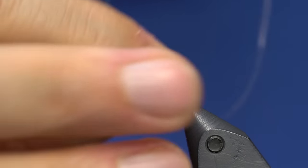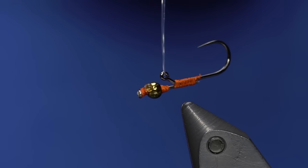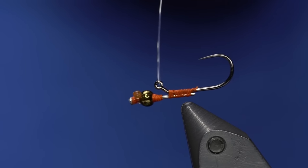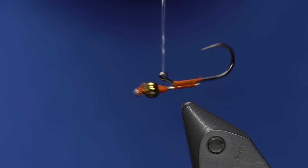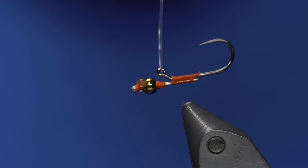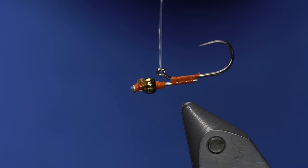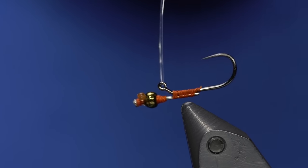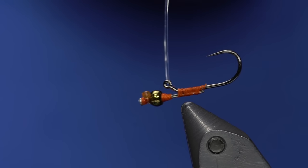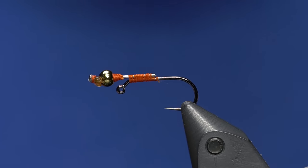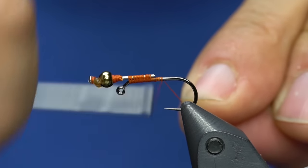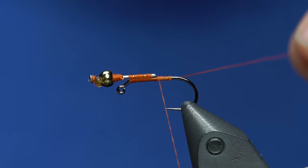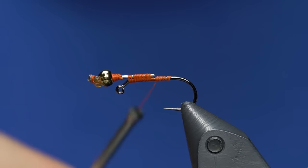The materials will still balance each other out because we'll have some dubbing up front and the tail, a little bit of dubbing in the back. So what I can do is just whip finish this. Now I'm just going to grab a piece of monofilament and test the balance. If anything, you want it a little bit slanted bead heavy.